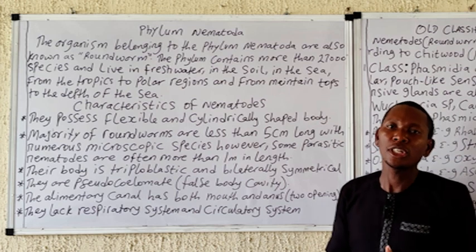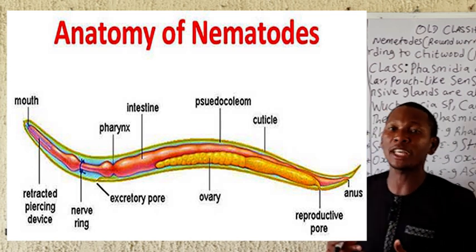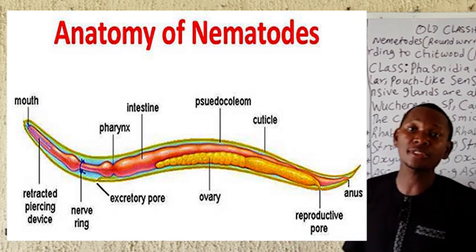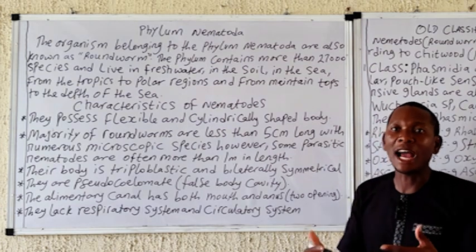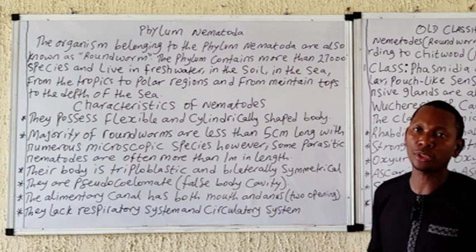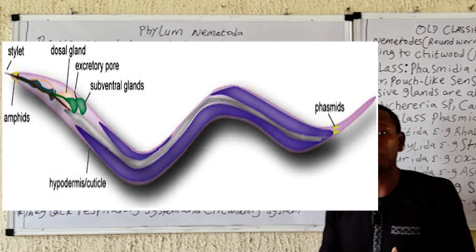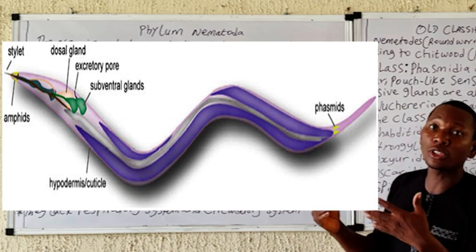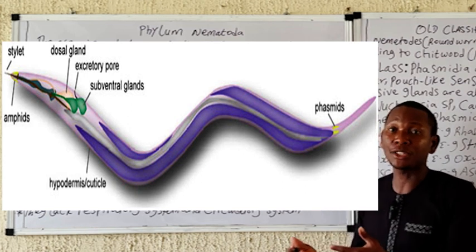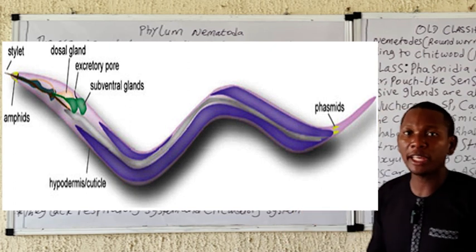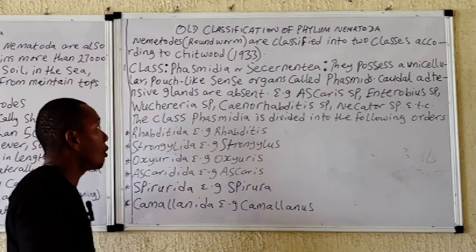The epidermis is syncytial, which is a type of cell that contains numerous nuclei. Some organisms are parasitic and some are free-living. As seen from the diagram on the board, they possess a complete digestive system — meaning two openings to the external environment: the mouth and the anus. They lack a respiratory system and a circulatory system. They are sexually dimorphic and carry out sexual reproduction. They also possess a structure called a phasmid, a sensory structure at the posterior end, while some organisms possess a sensory structure called the amphid at the anterior end.